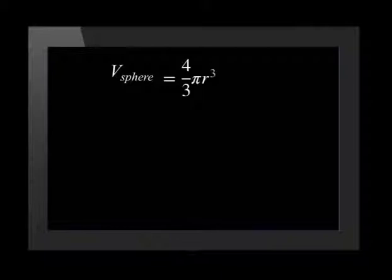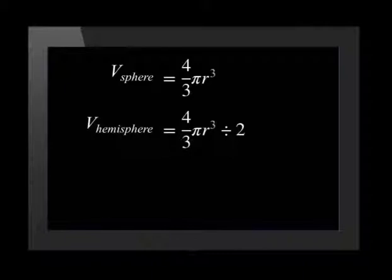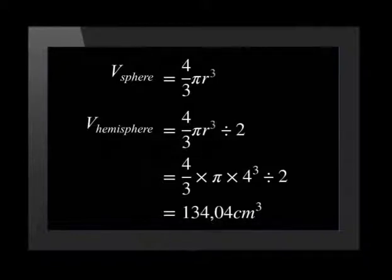For the volume of the solid, we calculate the volumes of each of the three different parts of the solid and add them together. The volume of a sphere is calculated by 4 over 3 times pi r cubed. So for a hemisphere, we divide that by 2. Substituting in the radius of 4 centimeters, we get the volume equal to 4 over 3 times pi times 4 cubed divided by 2, which works out to be 134.04 centimeters cubed.